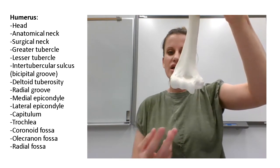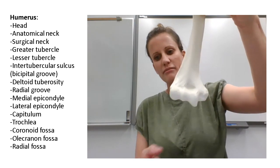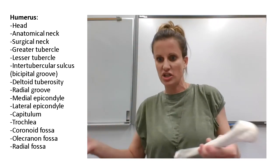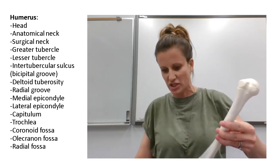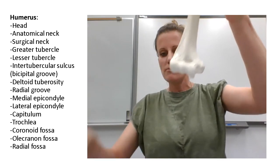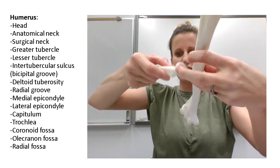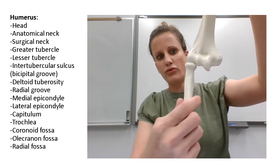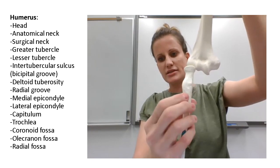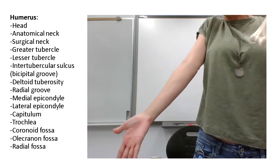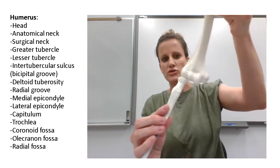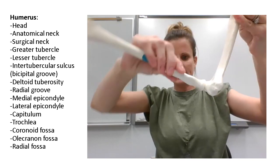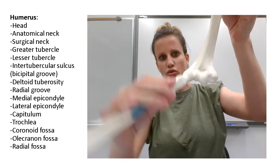The trochlea and the capitulum are the two processes down here that connect to the ulna and radius. The capitulum is this rounded ball-shape process — I remember that because it's round, and the top of the Capitol building is round, so capital/capitulum. This round process forms a joint with the circular head on top of the radius. When you pronate and supinate your arm, you're twisting the head of the radius on the capitulum. When you flex and extend your elbow, the head of the radius is also moving on the capitulum.